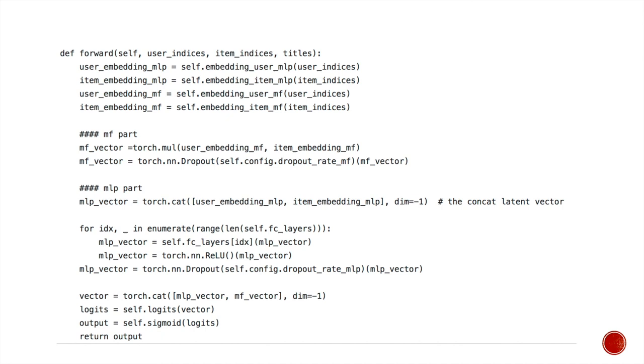For the forward function, we first let the user indices and item indices pass through the embedding layers. For the GMF part, we use torch.mul to perform element-wise multiplication. One thing to note is that I use the dropout layer to regularize the network which is not used in the original paper. I found that using this dropout layer will improve the performance of the model.